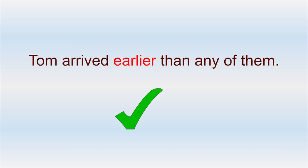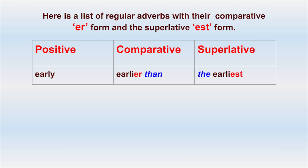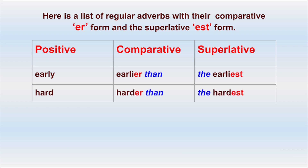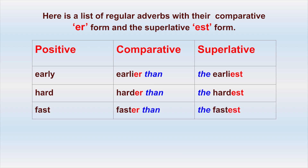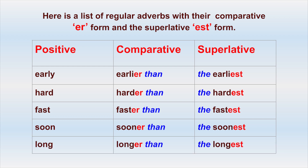Here is a list of regular adverbs with their comparative -ER form and superlative -EST form. Early — earlier than — the earliest. Hard — harder than — the hardest. Fast — faster than — the fastest. Soon — sooner than — the soonest. Long — longer than — the longest.